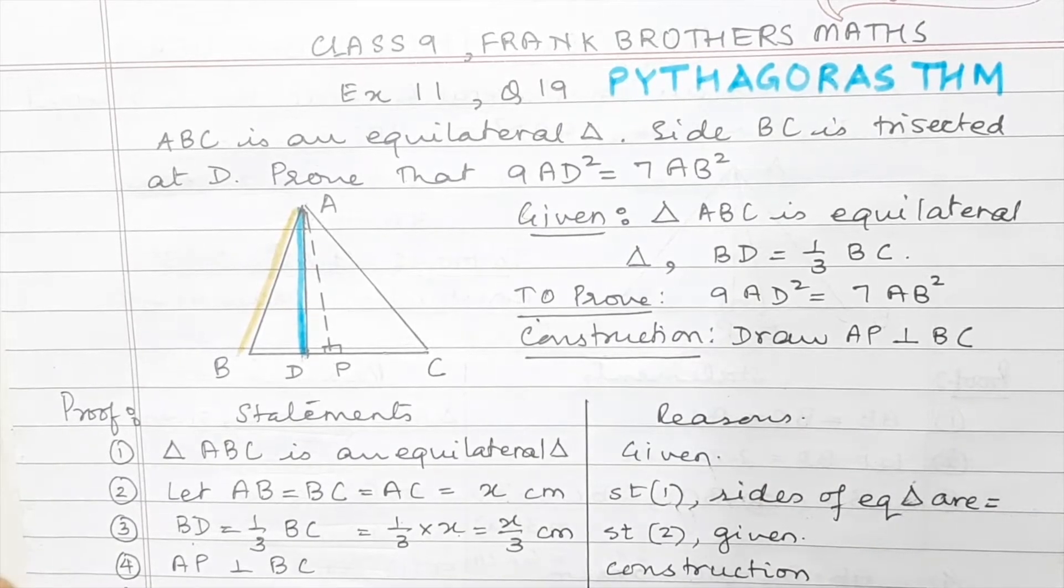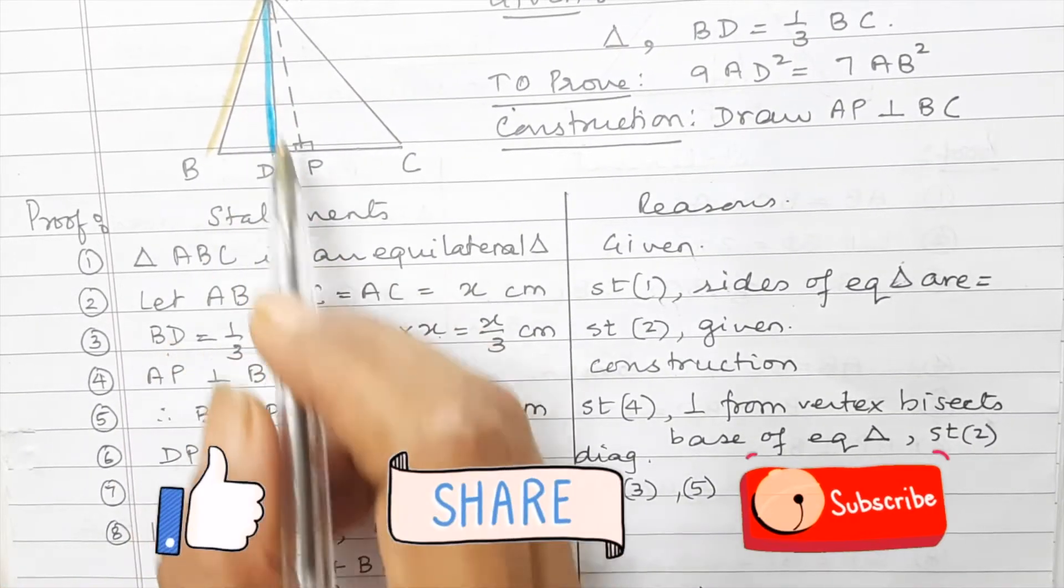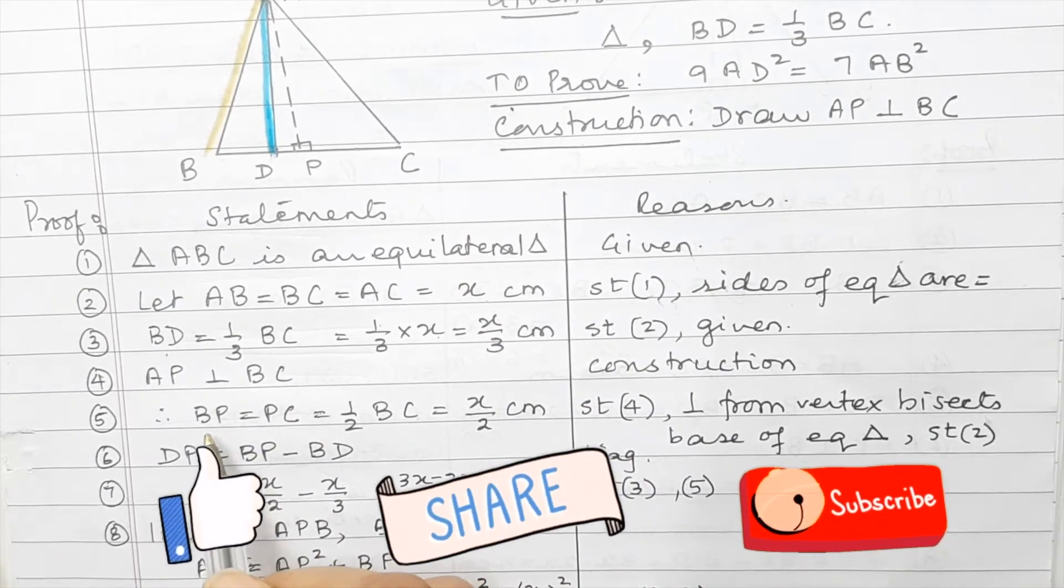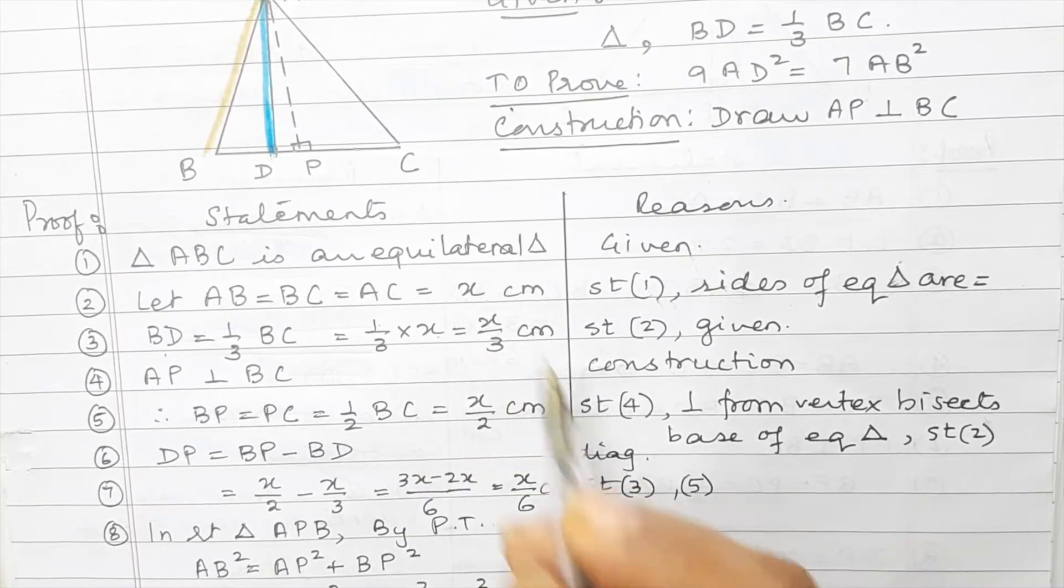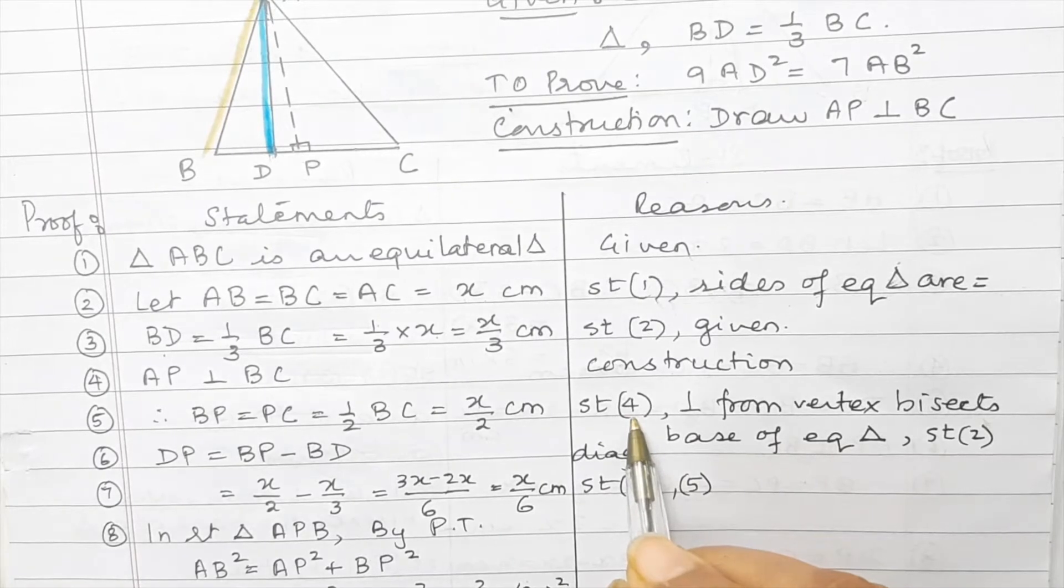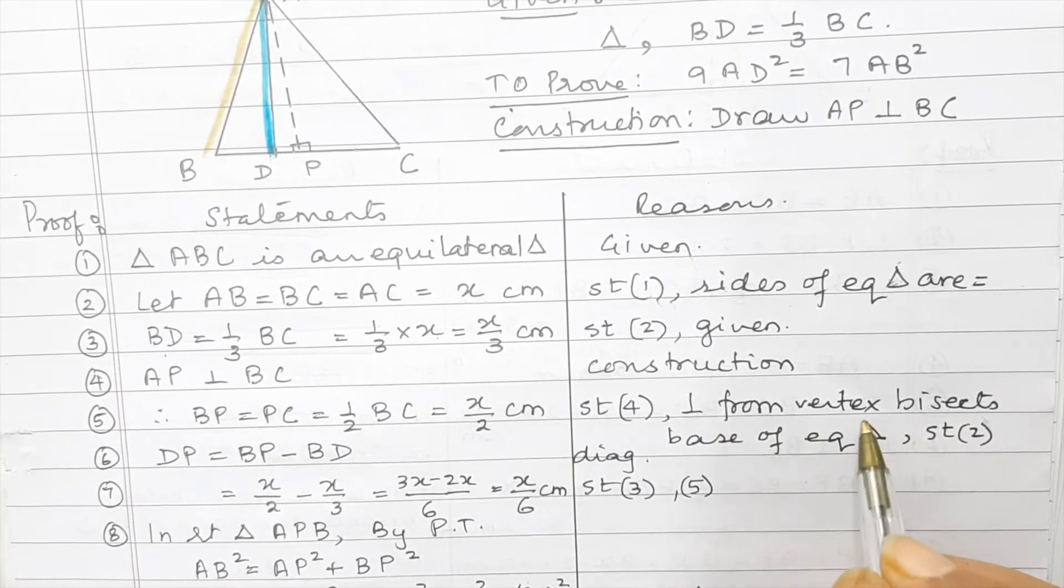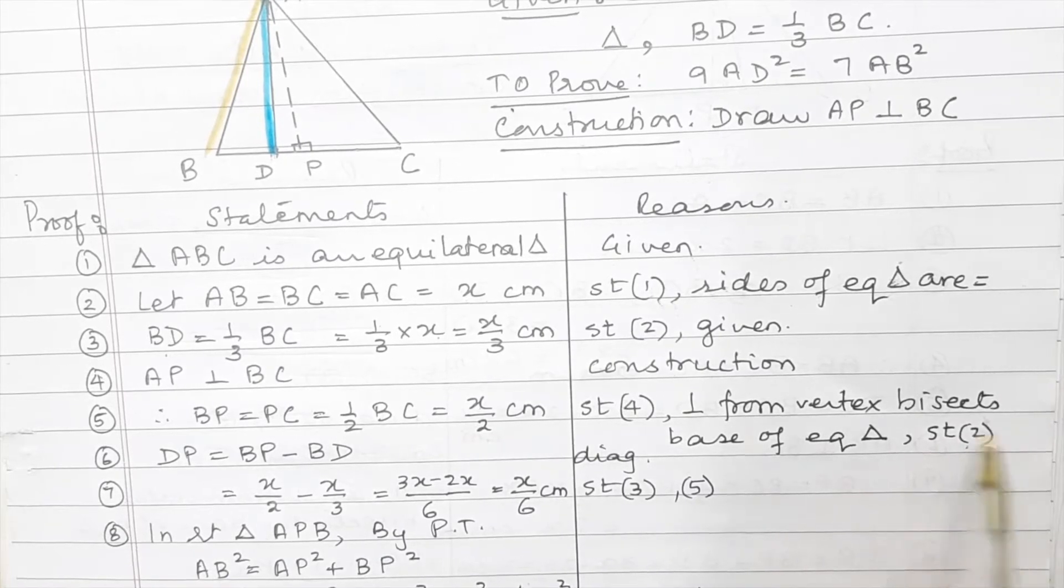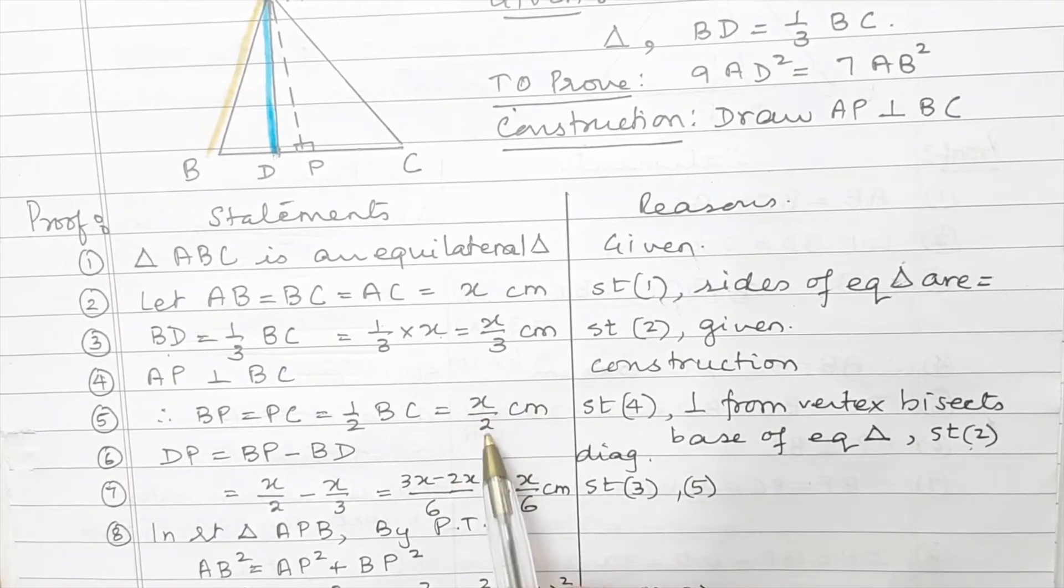Then we say AP is perpendicular to BC as it was given over here, that is construction. Now because AP is perpendicular, it is going to divide BC into two equal parts. So we will write BP equal to half BC. And what is BC? It is X. So it will be X upon two centimeter. And the reason will be statement number four, which is the construction AP perpendicular to BC and perpendicular from the vertex bisects the base of the triangle. And that is your statement number two also, because statement number two says BC is X. So we write it as X upon two.